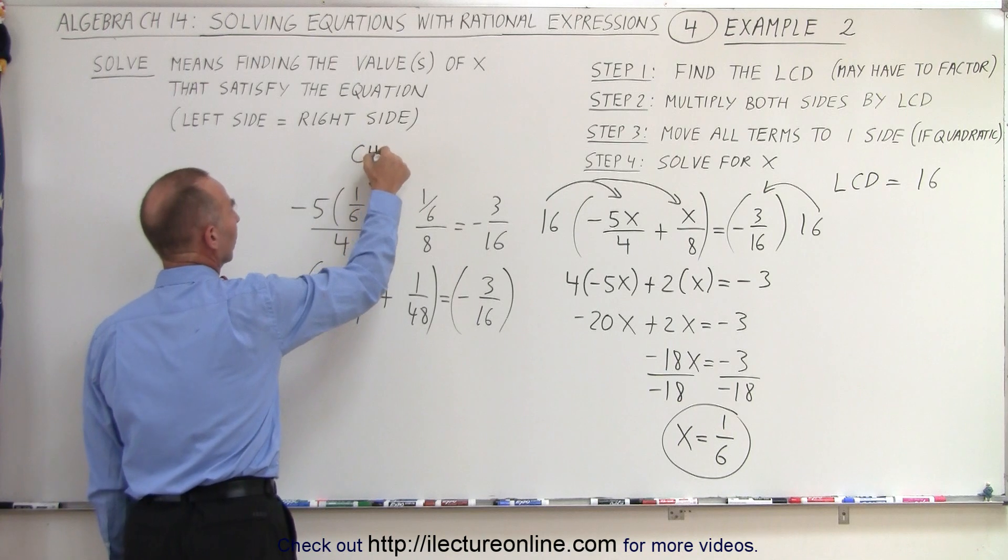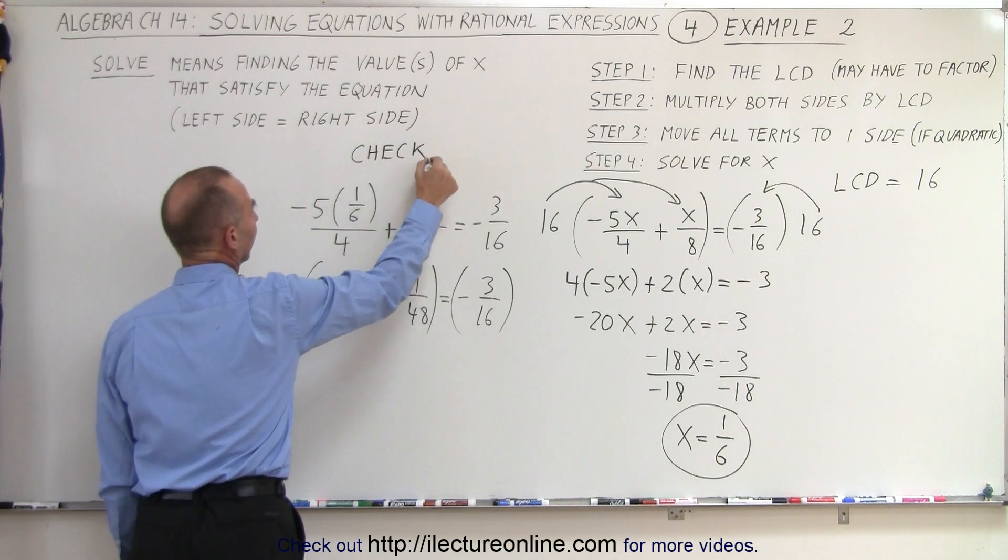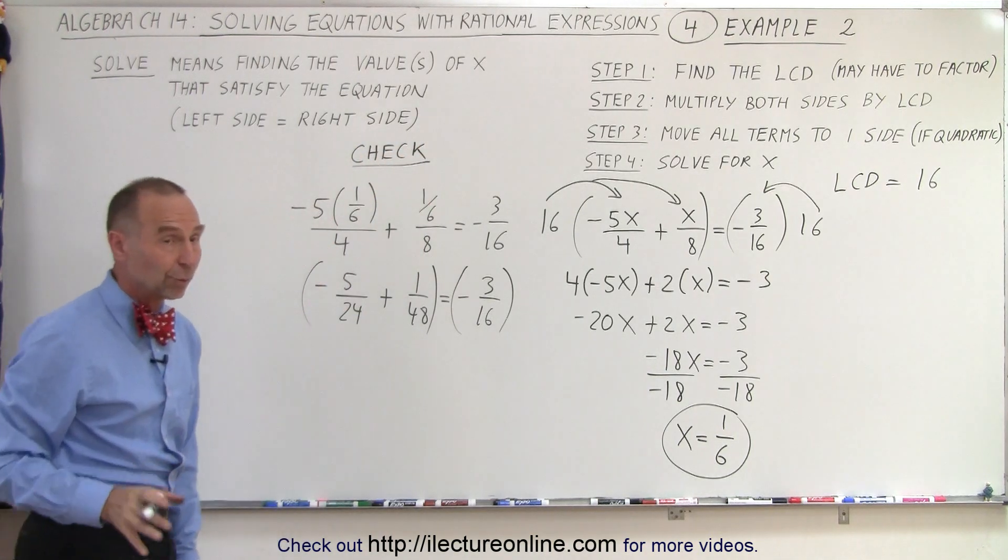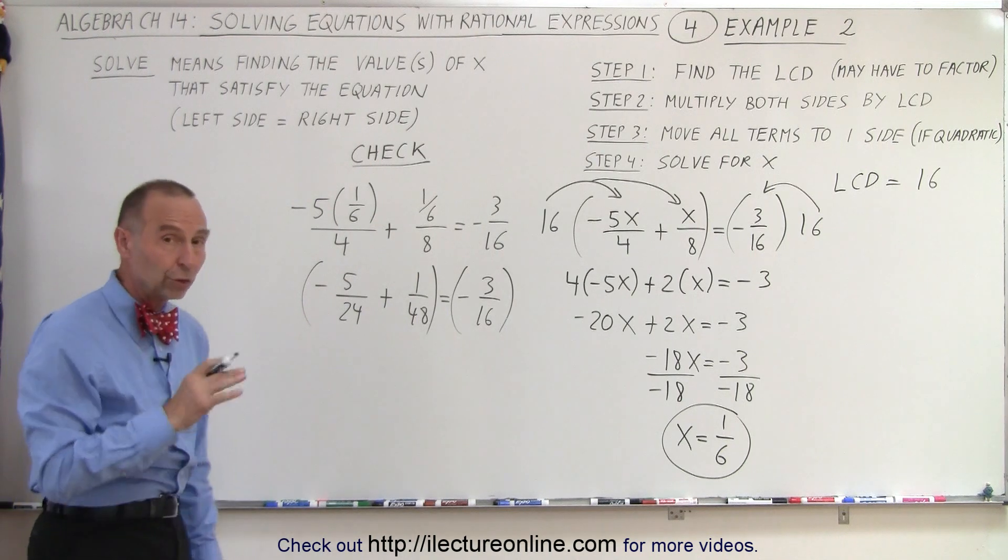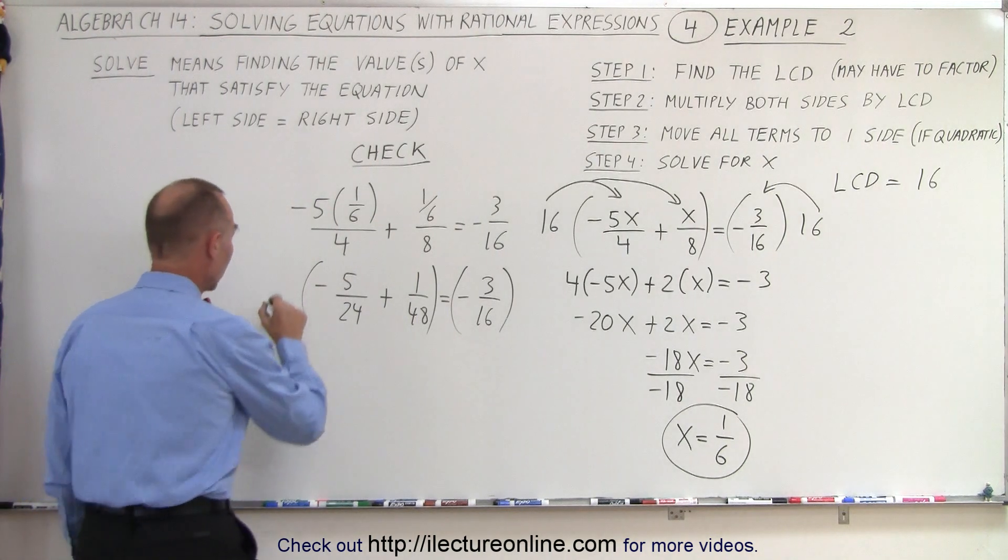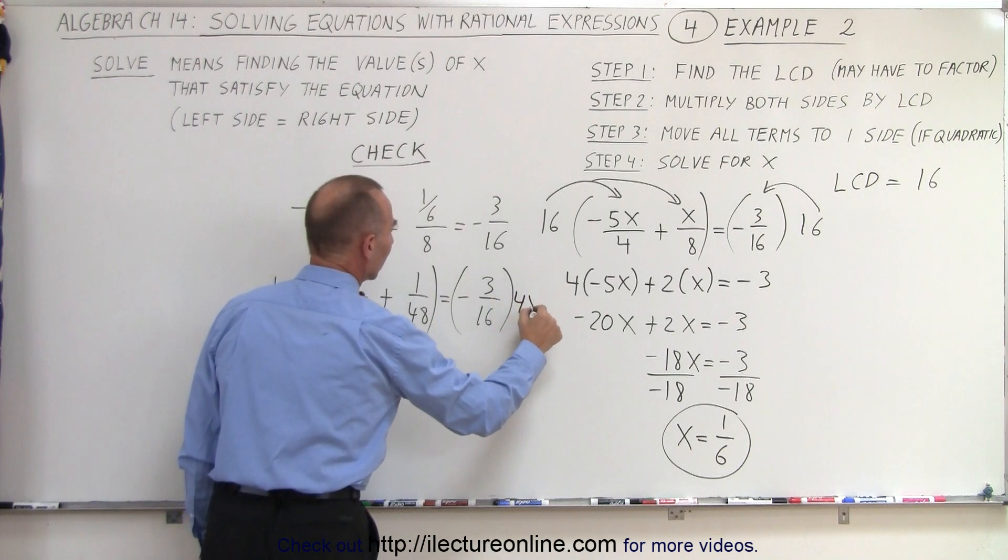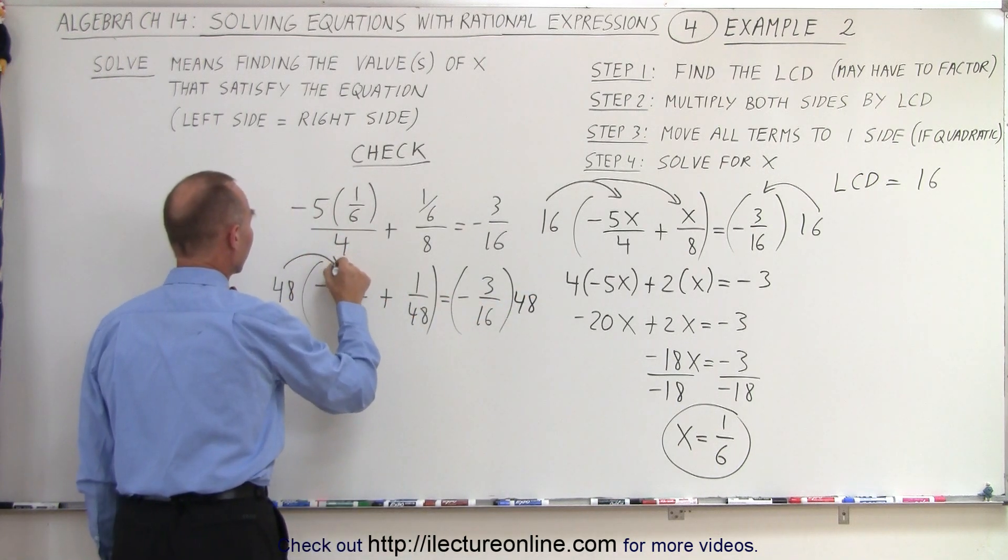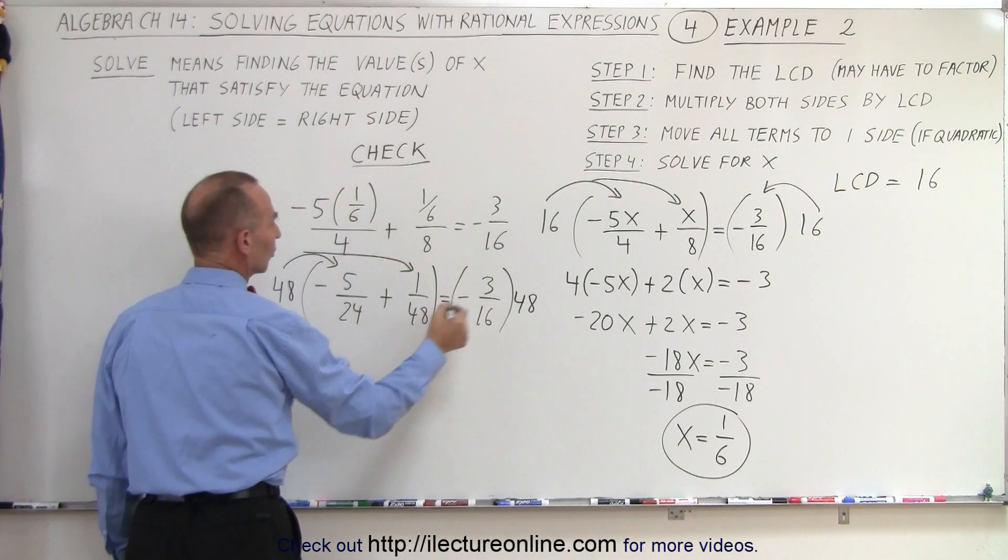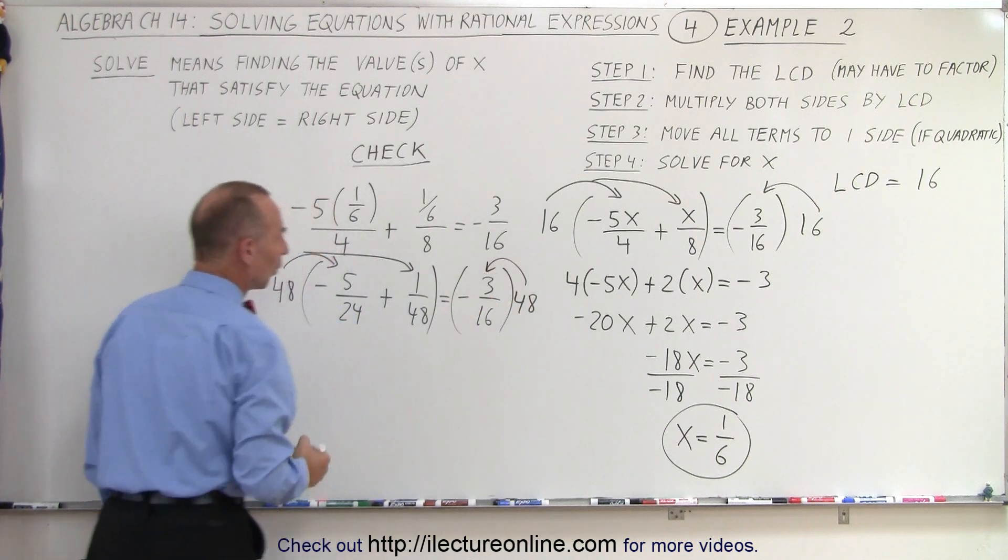Again, we're doing this to check. We don't have to, but hey, if this was a test and want to make sure it was correct, we definitely would want to do this if we had the time. So multiply both sides by 48. Again, notice that the 48 is multiplied with the first term and the second term, where 48 is only multiplied once here.